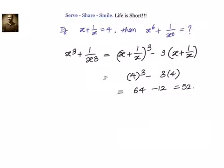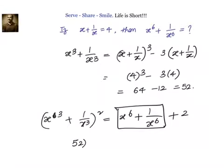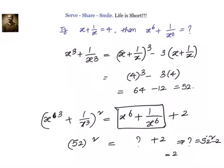Now we square x cube plus 1 by x cube to get x power 6 plus 1 by x power 6. Squaring gives: (x cube plus 1 by x cube) square equals x power 6 plus 1 by x power 6 plus 2. So 52 square equals what we want plus 2, meaning x power 6 plus 1 by x power 6 equals 52 square minus 2, which is 2704 minus 2, which equals 2702. Both methods give the same answer: 2702.